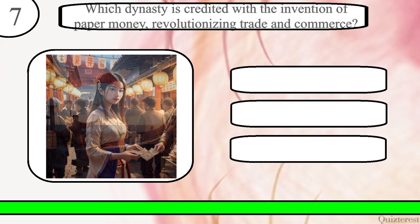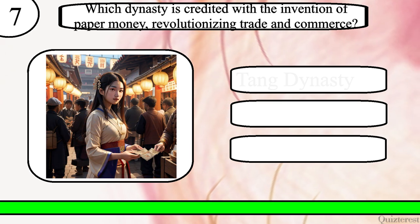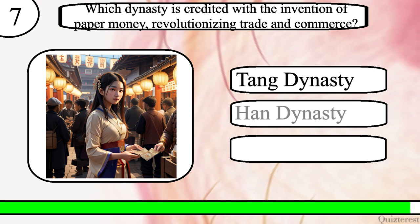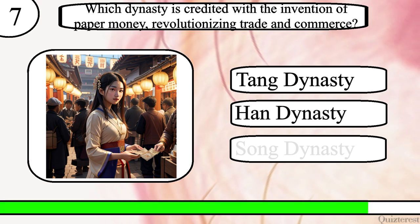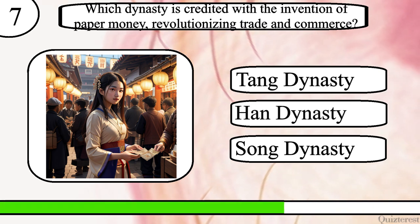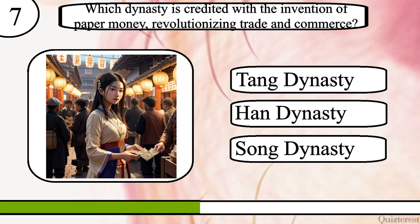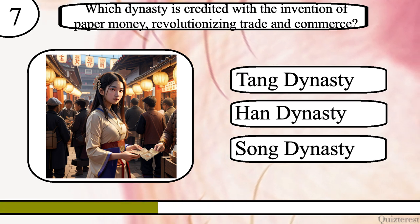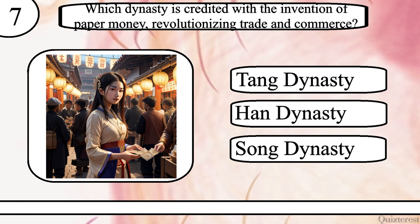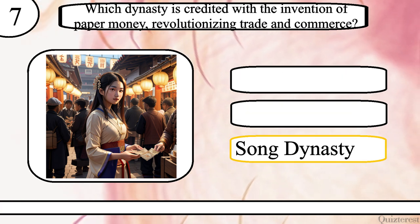Question 7. Which dynasty is credited with the invention of paper money, revolutionizing trade and commerce? Tang dynasty, Han dynasty, or Song dynasty? The correct answer is Song dynasty.